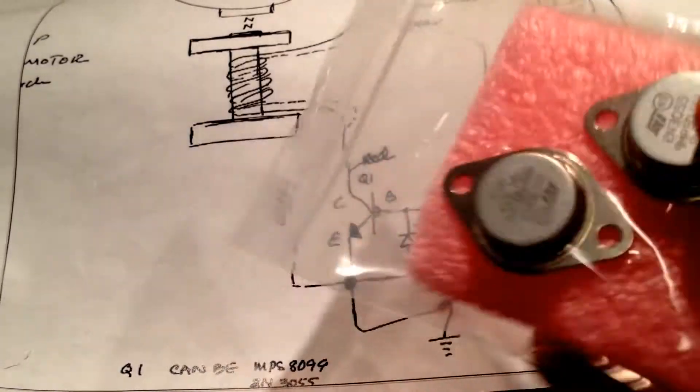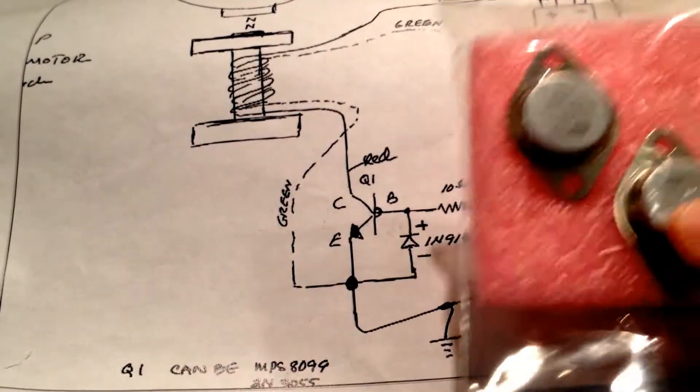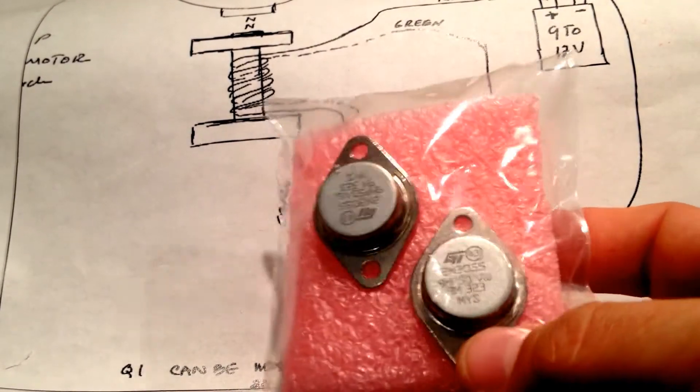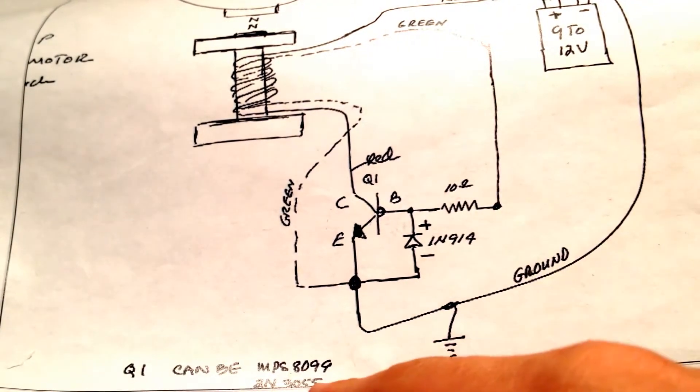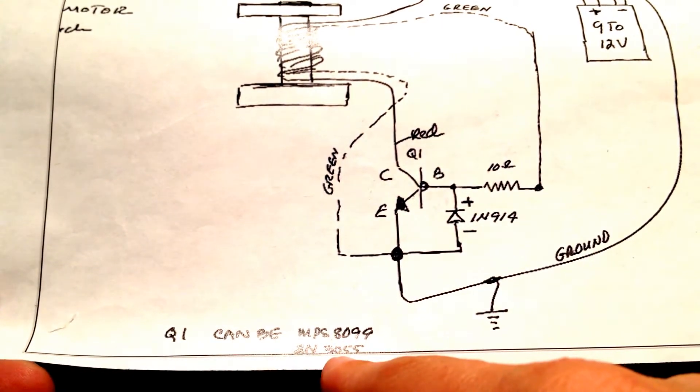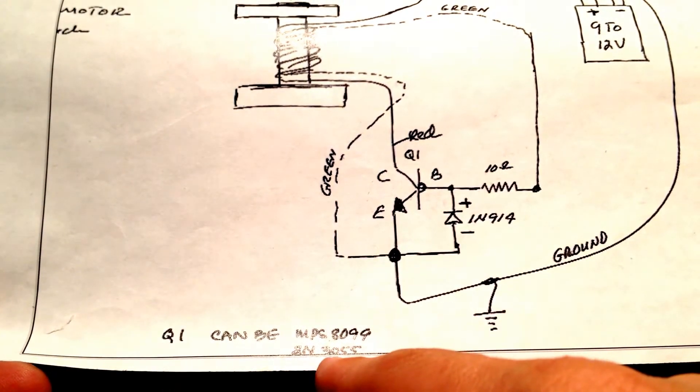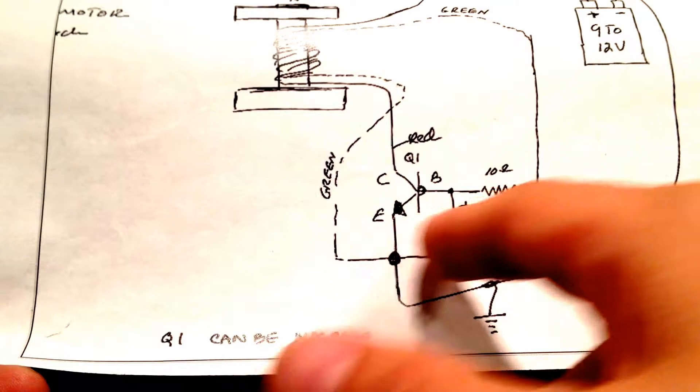And some transistors. Well you only need one. But the 2N3055 which is what he has on the schematic here. That goes right there.